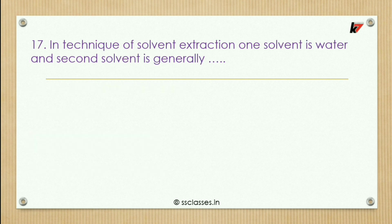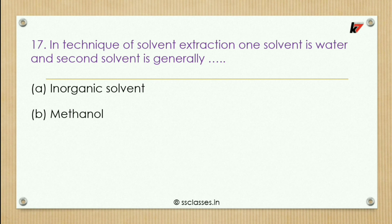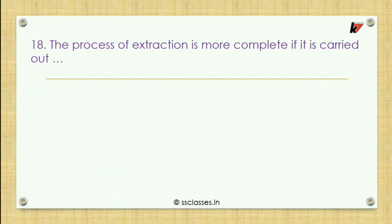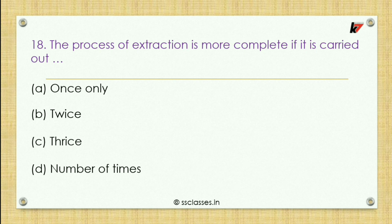Seventeenth question: in the technique of solvent extraction, the first solvent is water and the second solvent is generally what type? Options: inorganic solvent, methanol, an organic solvent, or polar solvent. The correct answer is an organic solvent — option C. Eighteenth question: the process of extraction is more complete if it is carried out how many times? Options: once, twice, thrice, or a number of times. The correct option is a number of times — it may be four, six, or ten times.